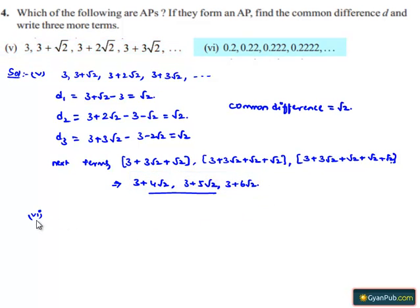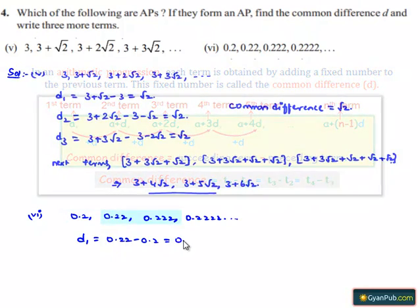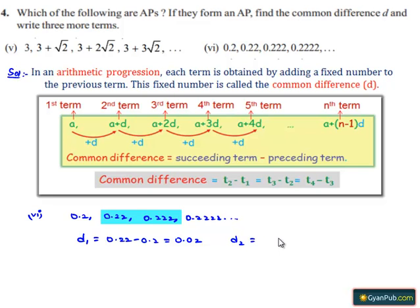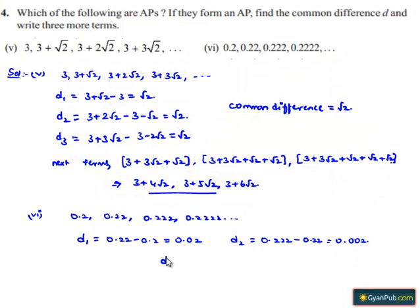Now moving on to the sixth bit. The series is 0.2, 0.22, 0.222, 0.2222, and so on. The difference between the second and first term, d1, is 0.22 − 0.2 = 0.02. And d2, the difference between the third and second term, is 0.222 − 0.22 = 0.002. Since the common difference between consecutive terms is not equal, the given series does not form an arithmetic progression.